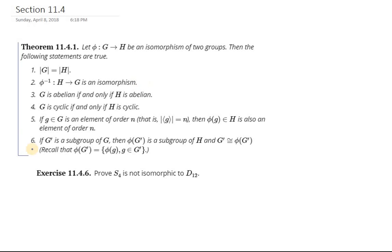Five is actually a special case of six. Six says that if G has a subgroup called G prime, then H must also have a subgroup that's isomorphic to G prime. Every subgroup of isomorphic groups also has an isomorphic subgroup.